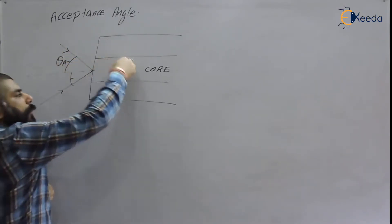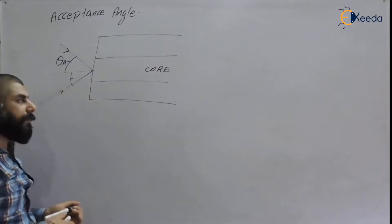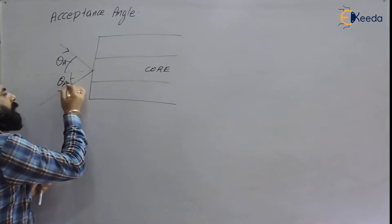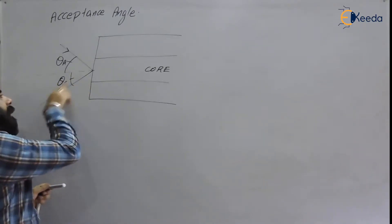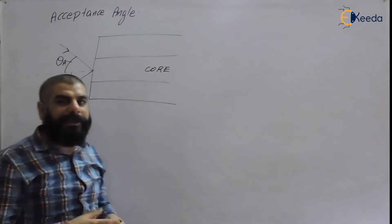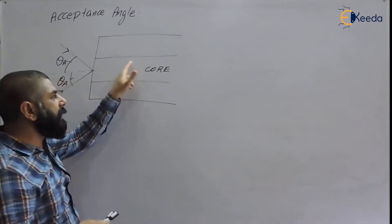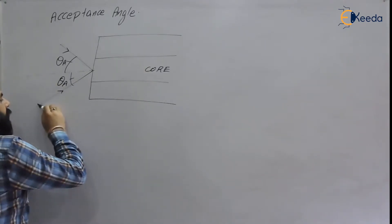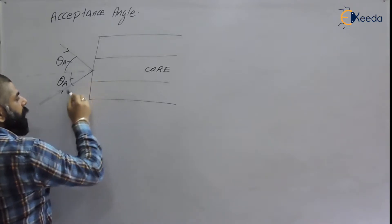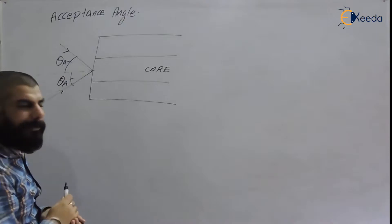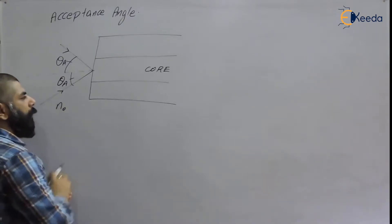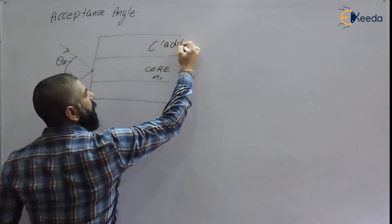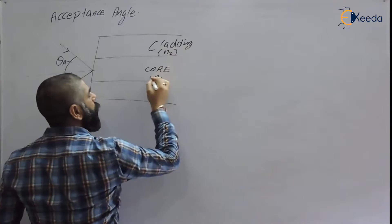If the acceptance angle comes out to be 60 degrees and I send the input signal at more than 60 degrees — say 65 or 70 degrees — then total internal reflection will not take place inside the core. Suppose this is the incident ray in a medium — it may be air or some other medium having refractive index n0. This is the core having refractive index n1.